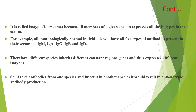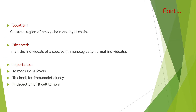Isotype means 'same.' All members of a given species express all isotypes in their serum. For example, all immunologically normal individuals will have all five types of antibodies — IgM, IgA, IgG, IgE, IgD — present in their serum. Different species possess different constant region genes and therefore express different isotypes. Taking antibodies from one species and injecting them into another species could result in anti-isotypic antibody production. The location of isotypic determinants is in the constant region of the heavy and light chains, and the importance is to measure immunoglobulin levels and check for immunodeficiency and detection of B-cell disorders.